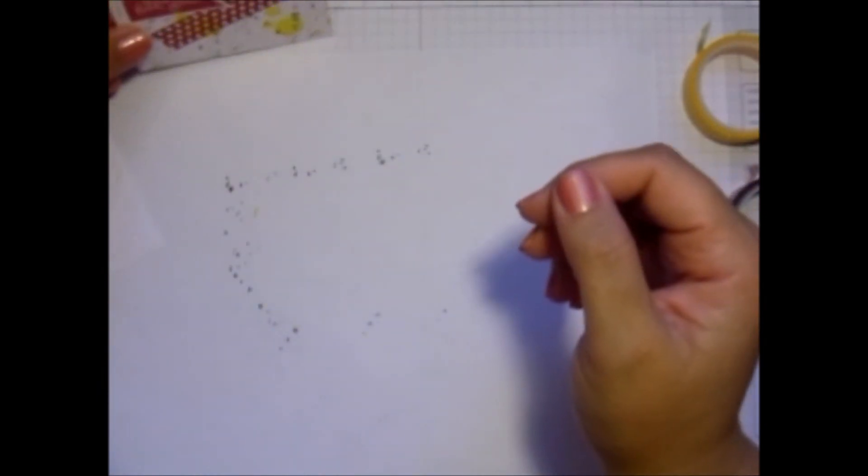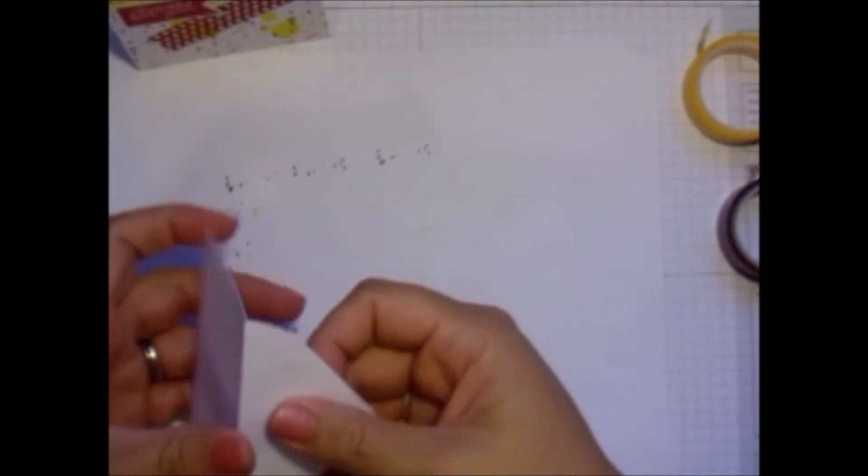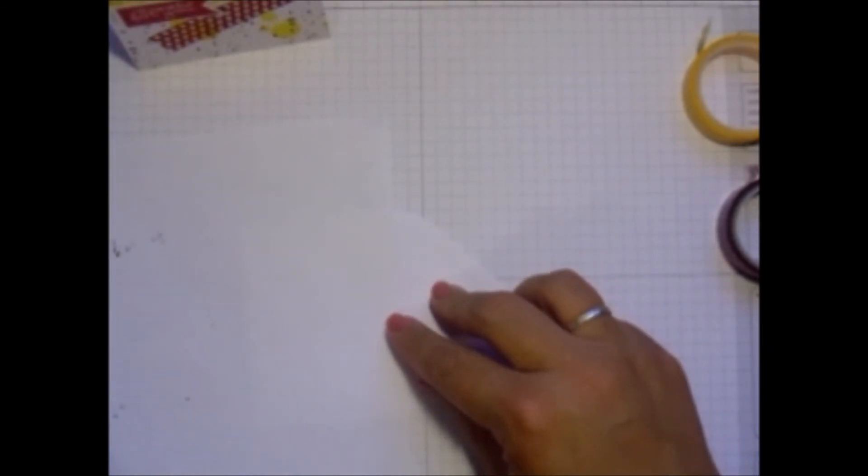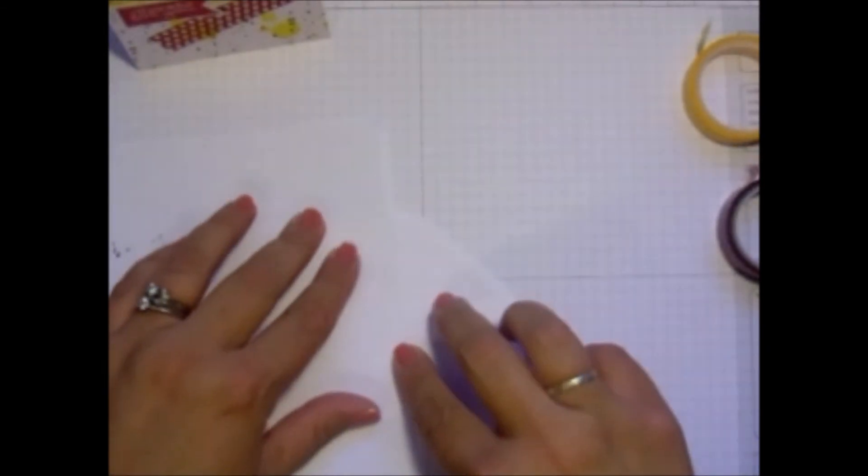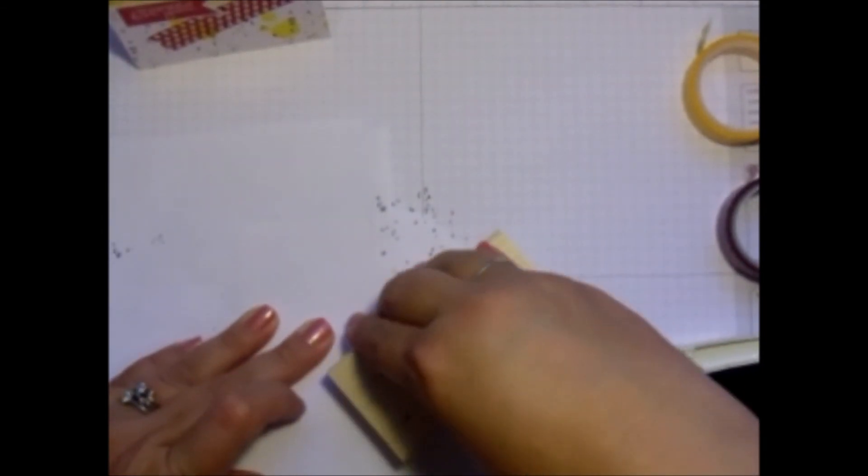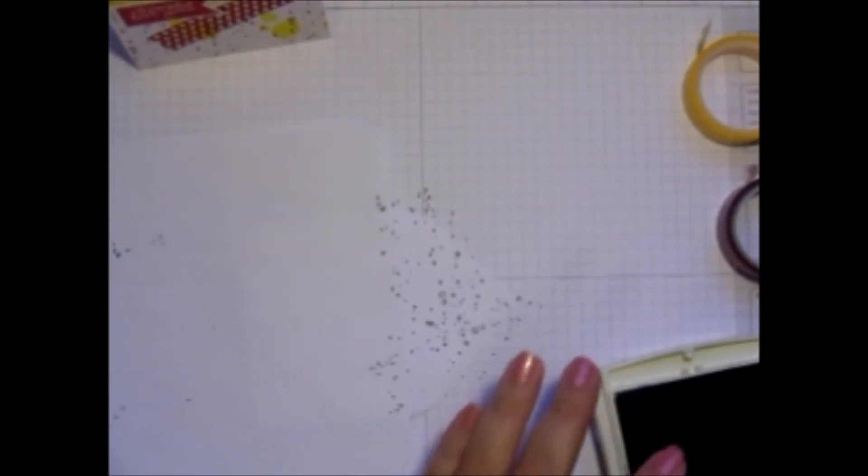And of course if I'm going to be doing a card with an envelope, I want to make sure that I have that to match. So I'm going to mask off the front portion. Go back over here to my Early Espresso. And just randomly stamp.